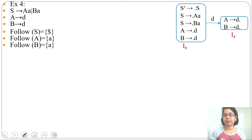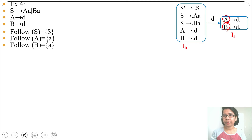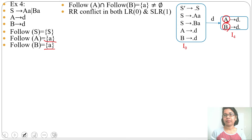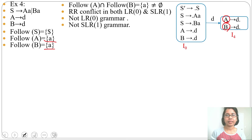In state i4, two reductions are present, so this is a reduce-reduce conflict in LR0. Let's check if this is an RR conflict in SLR1 as well. We need to check FOLLOW(A) and FOLLOW(B). If FOLLOW(A) ∩ FOLLOW(B) is not empty, then there is an RR conflict in SLR1. FOLLOW(A) is {a} and FOLLOW(B) is also {a}, so there is a common element 'a', which means reduce-reduce conflict is present in both LR0 and SLR1.